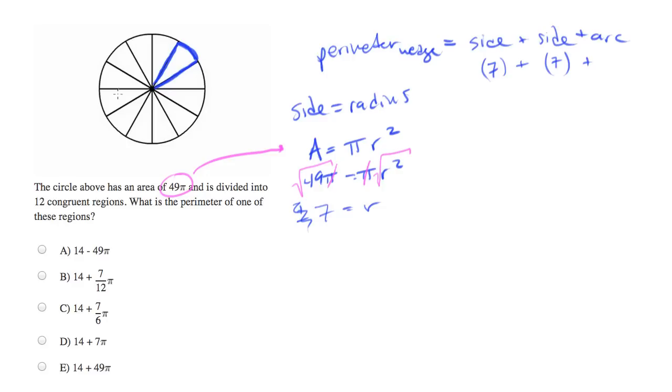Well, we know there's 12 congruent regions. So if I knew the circumference of this circle, I'd know that 1/12th of it is the size of that arc. So circumference over 12 equals the arc.